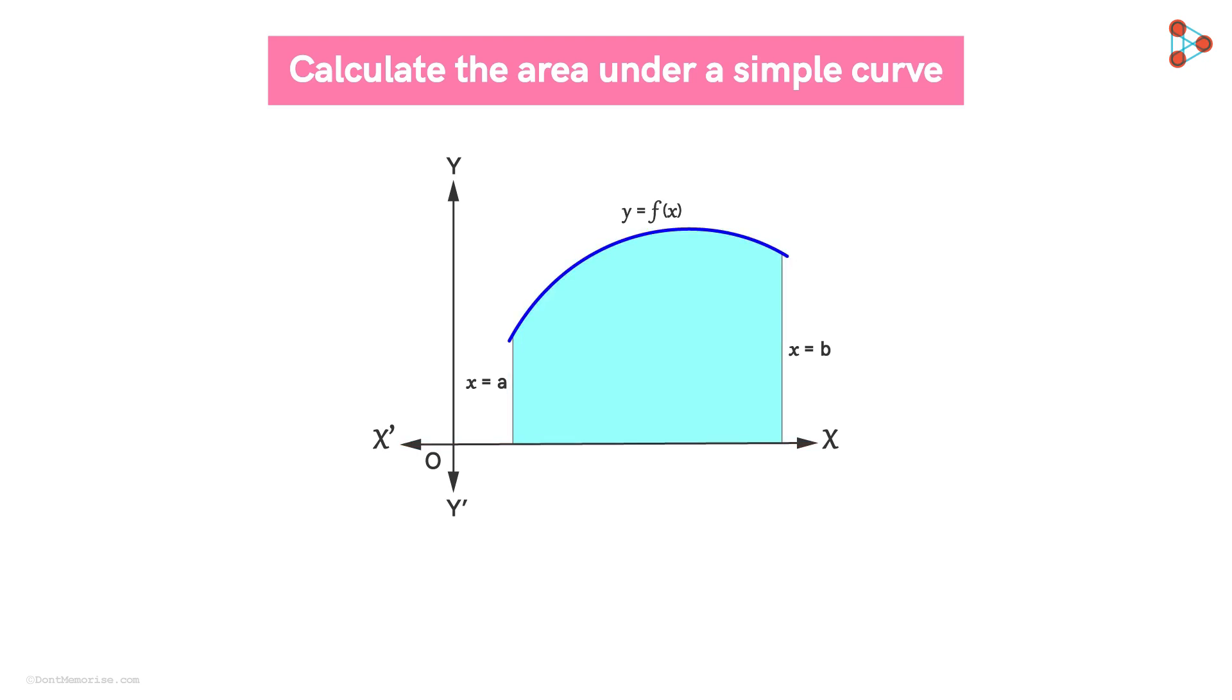Now consider an arbitrary vertical strip of height Y and width DX and locate it at an arbitrary position within the region specified by some value of X between A and B. So what will be the area of this strip? Yes, the area will be given by Y times DX and we will denote this area as DA.